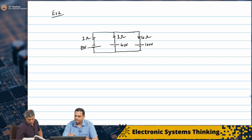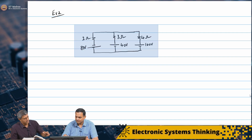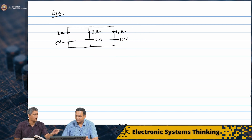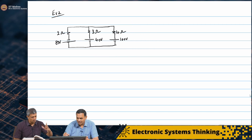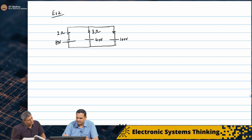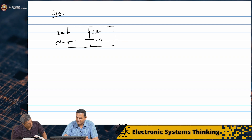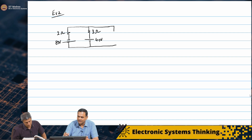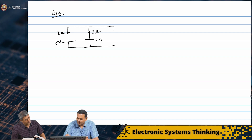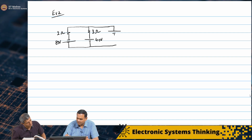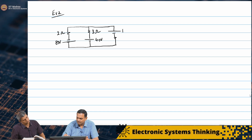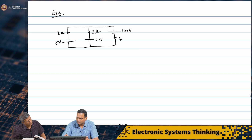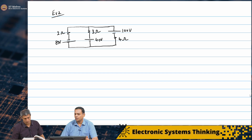The circuit has exchanged the 100 volt and 4 ohm positions — the 100 volt is actually on top. This is just to let students get used to different kinds of drawings. So the 100 volt is on top and the 4 ohm is below it. Perfect.